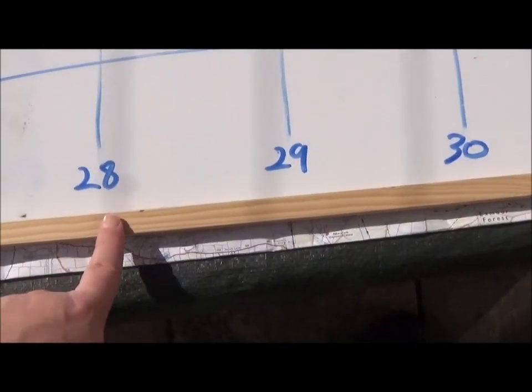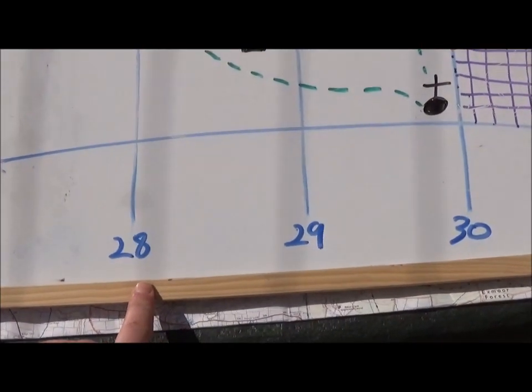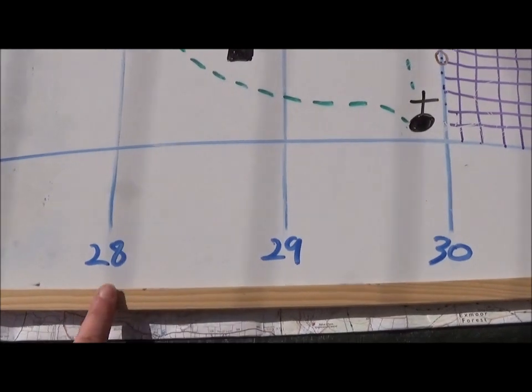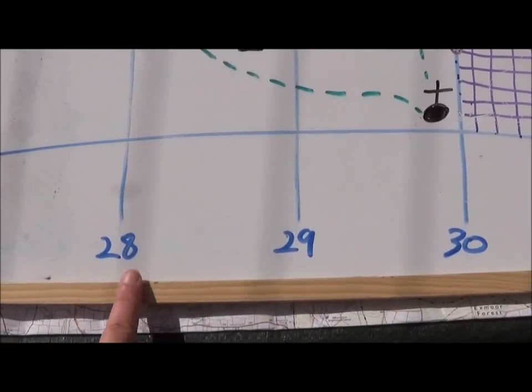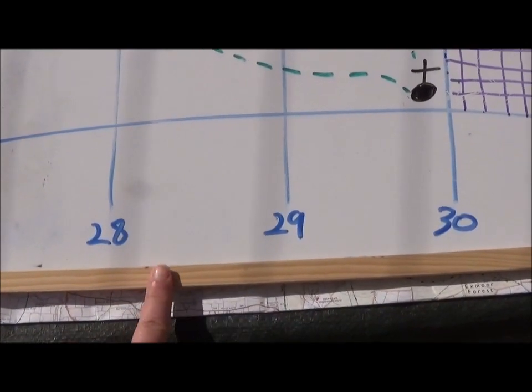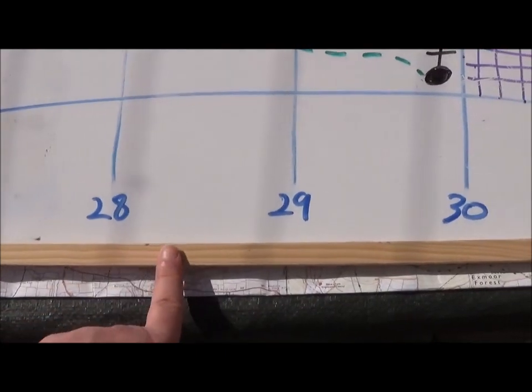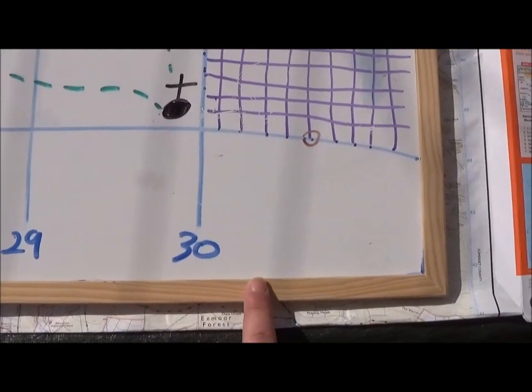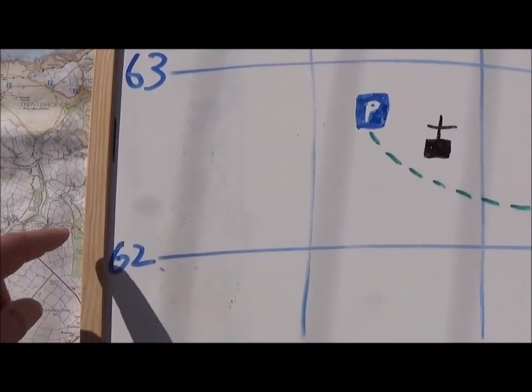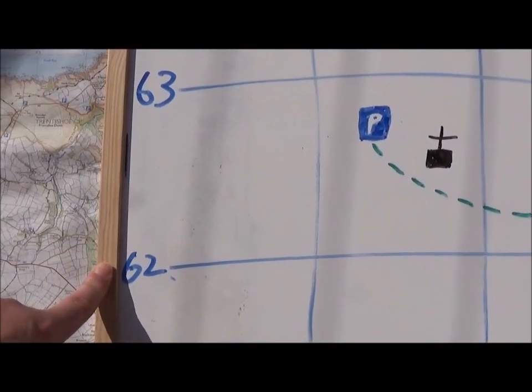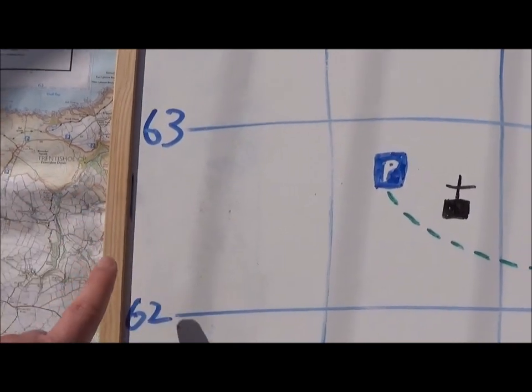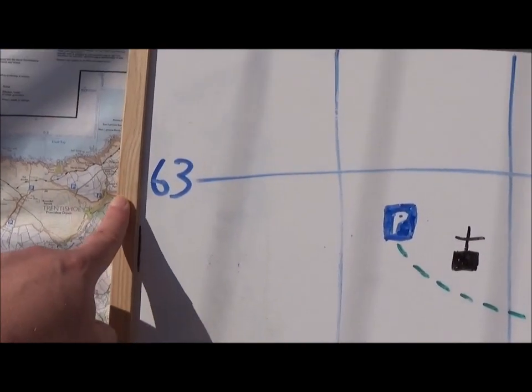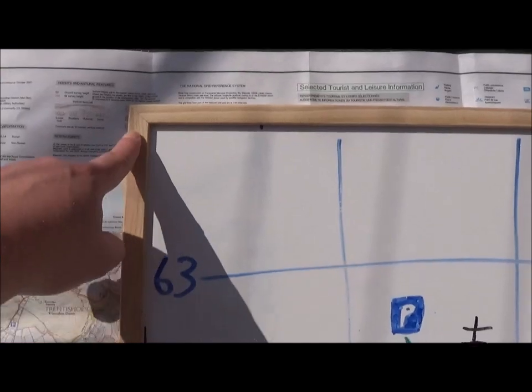So the number to the left of the square is always the number which refers to the square to the right of the number. So this is 28 all the way up to here. This is 29 all the way up to here, and 30 all the way up to there. And then going up, the number at the bottom refers to the square above it. So 62 goes all the way up to there and 63 goes all the way up to there.